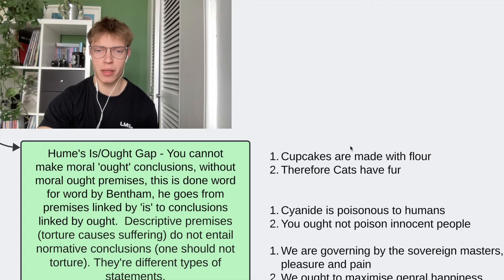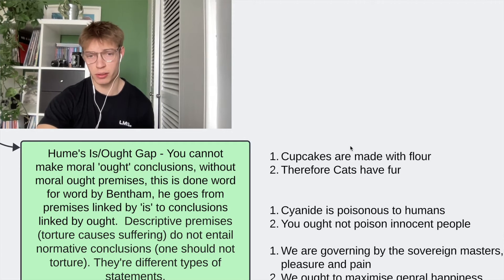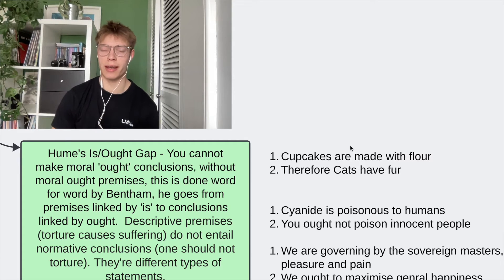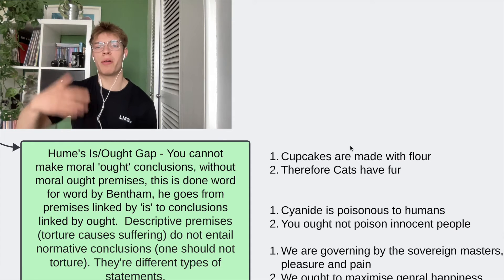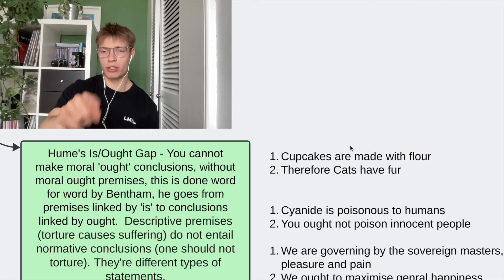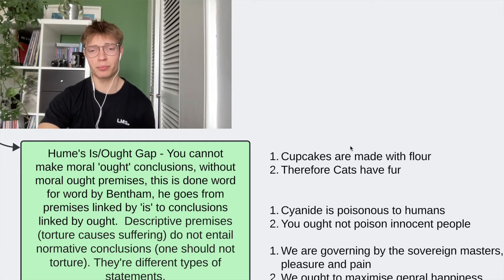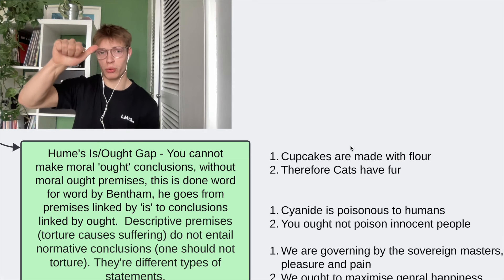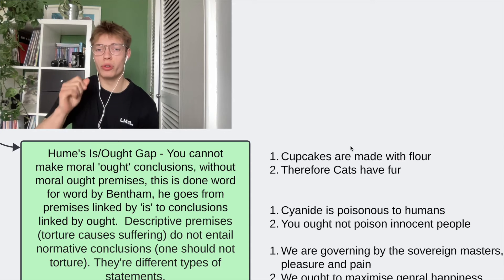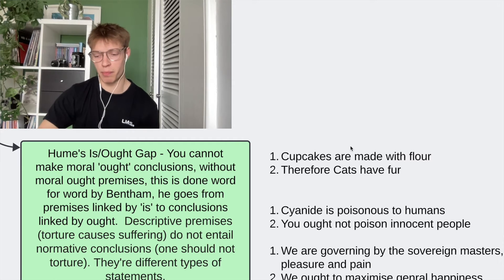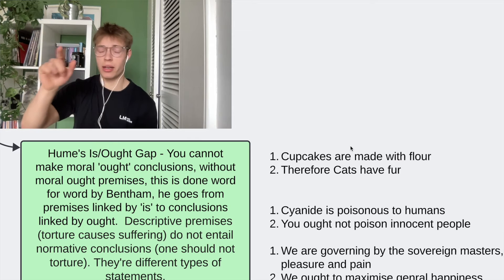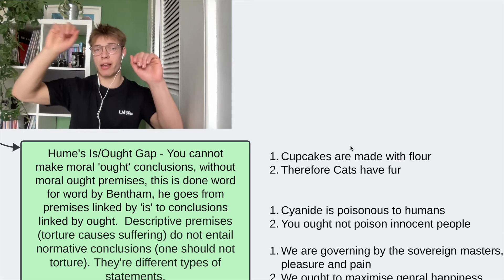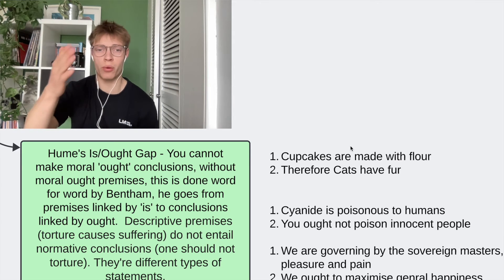Let's look at another example. Premise one: cyanide is poisonous to humans. Premise two: you ought not poison innocent people. This seems like it works, but it falls victim to the Is-Ought Gap. Cyanide is poisonous to humans is a factual claim — that's like a claim about cupcakes. 'You ought not poison innocent people' is a moral claim. The moral claim doesn't link to the fact, because a fact is like cupcakes and a moral claim is like cats — they're unrelated, so it also isn't a working argument.